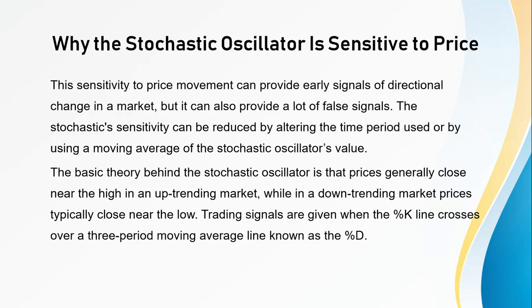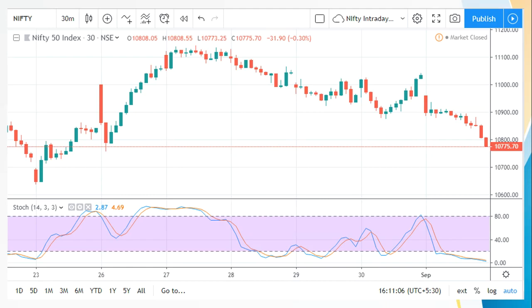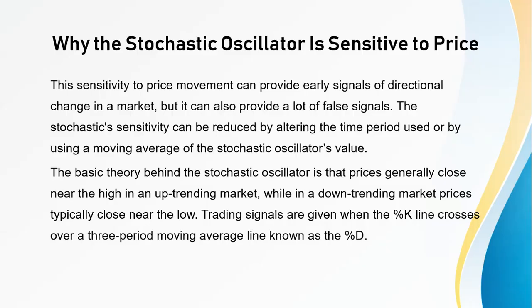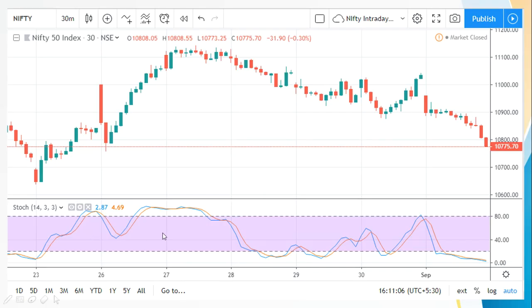Trading signals are given when the percentage K line — the blue line in the stochastic oscillator — crosses over a three-period moving average line known as the percentage D. The red line visible in the indicator is the percentage D line, and the blue line is the percentage K line.